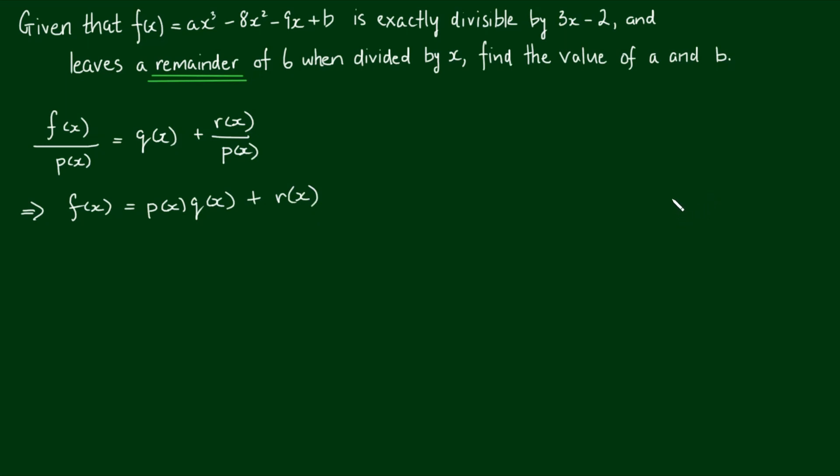And typically, p(x) is normally a linear divisor, so a polynomial of degree 1. So often it'll be in the form of x minus a, which means r(x) is always going to be 1 degree lower. So if p(x) is degree 1, r(x) is degree 0, which means r(x) is simply a constant. We'll call it r.